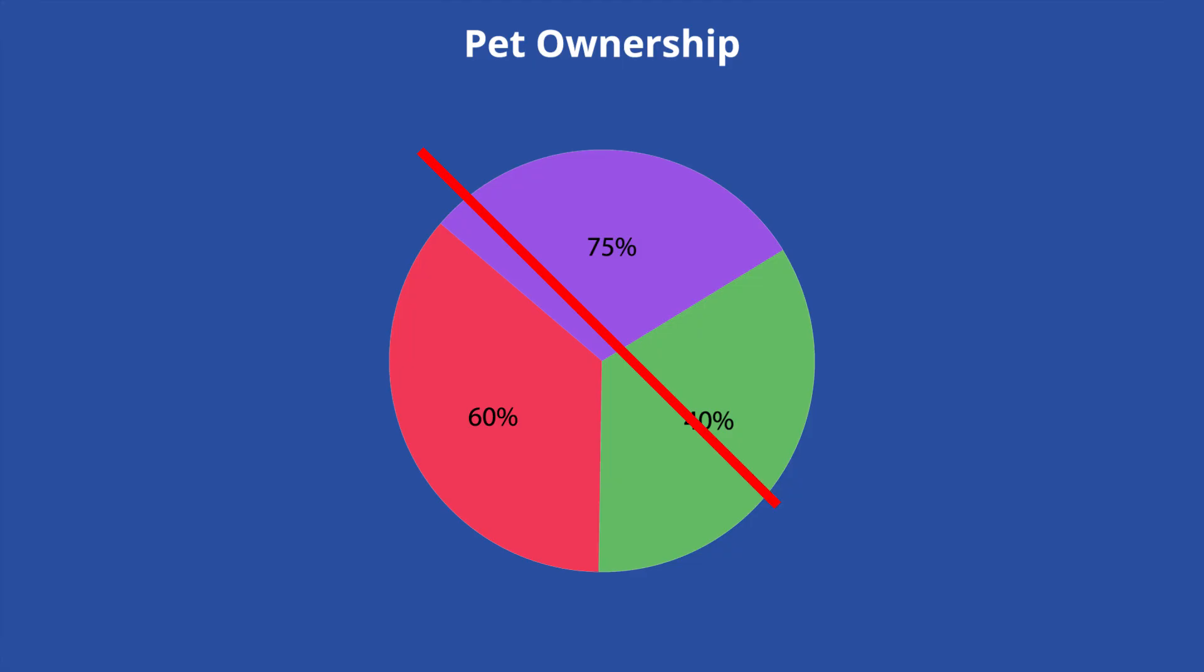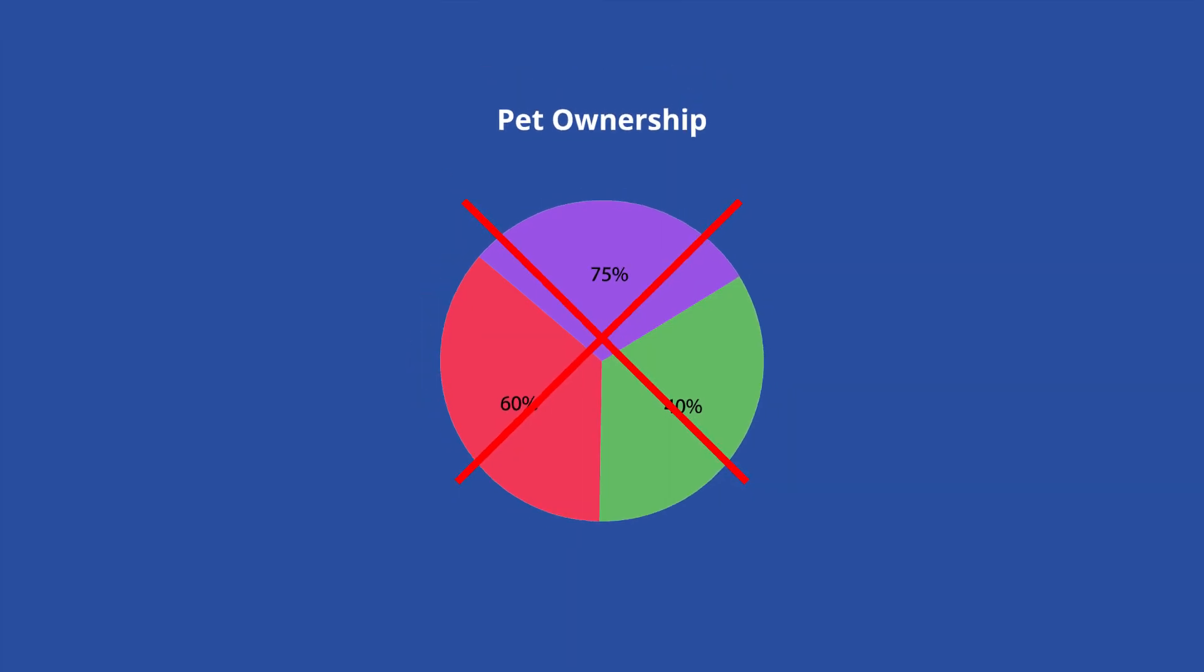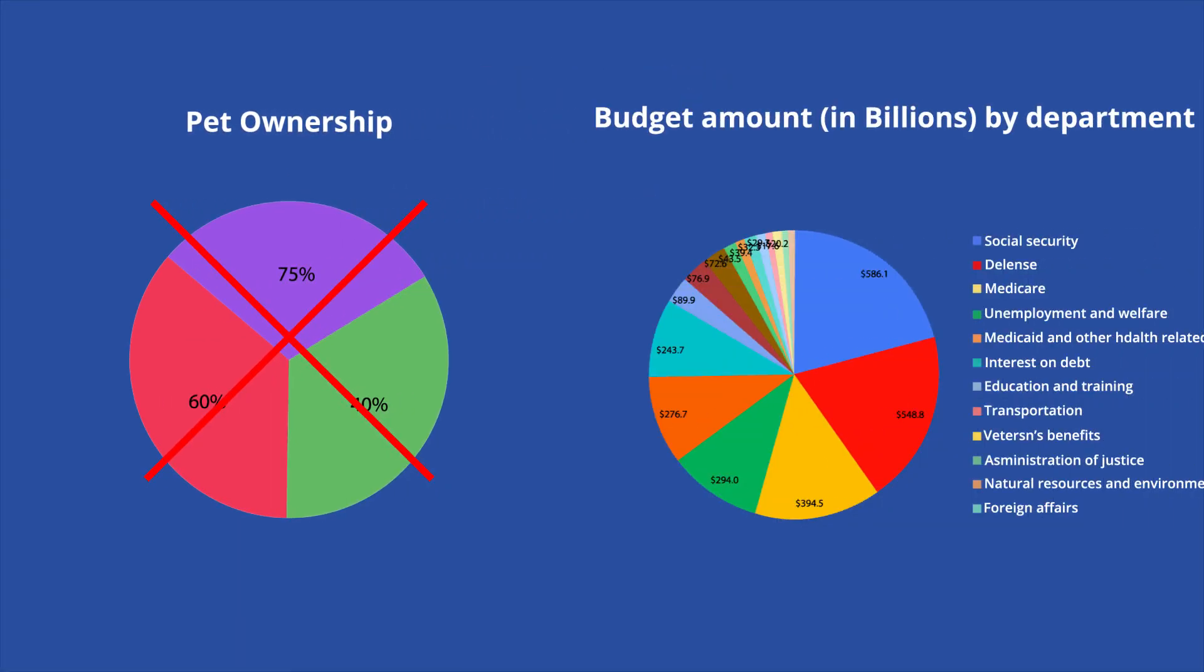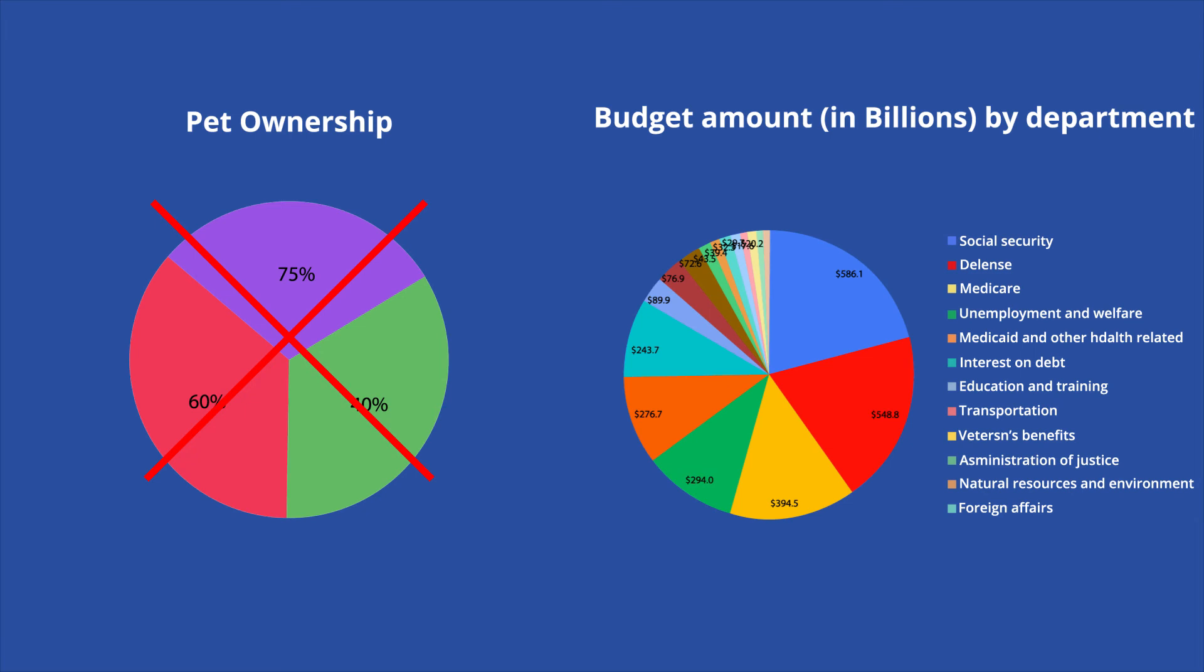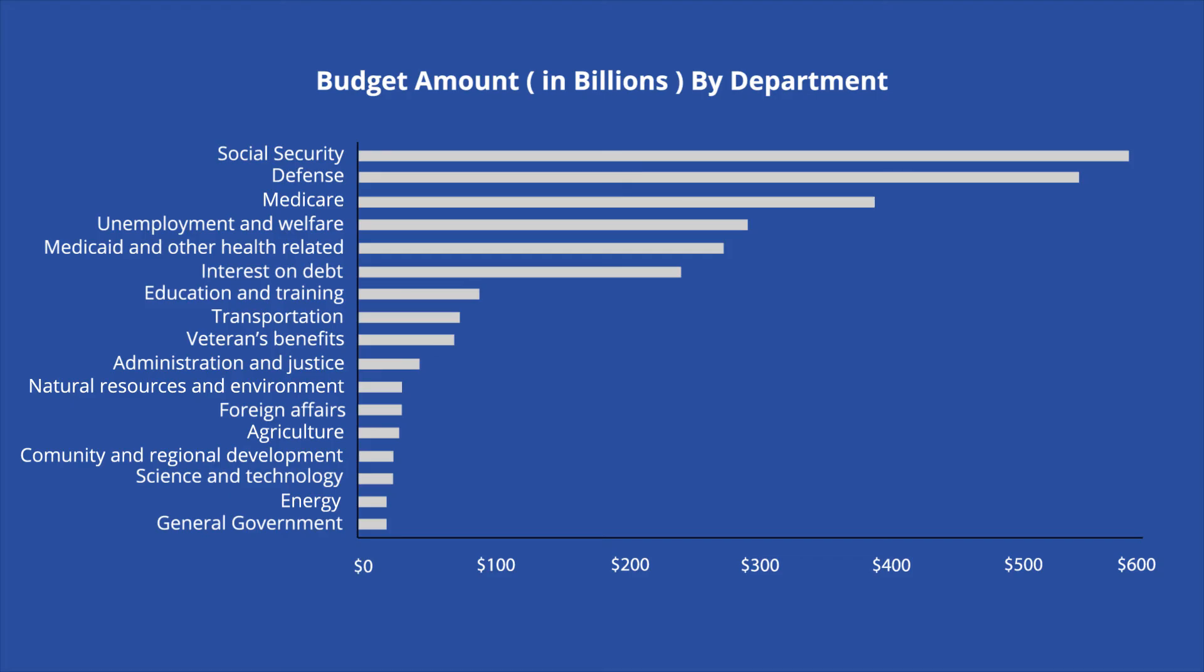For example, putting together answers to different questions can result in a pie chart exceeding 100%, which distorts the portion sizes. Another issue is having too many slices of the pie, causing the smaller slices of data to be unreadable. In these cases, a bar graph would be more appropriate.